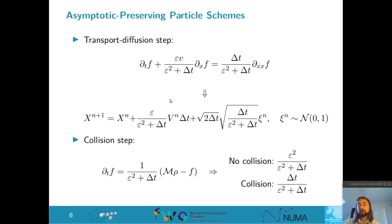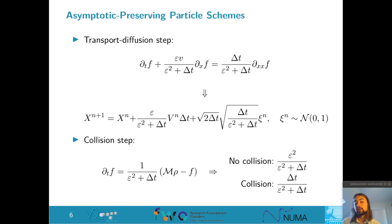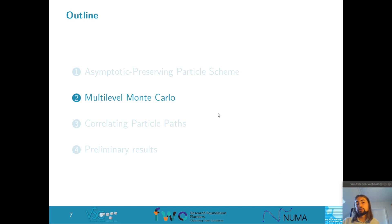We simulate using an operator splitting approach as before: first ignoring the collision operator we have a particle position x, a velocity v, and now also some Brownian motion, and we do a forward time step. Crucially, where we had the one-over-epsilon term that was blowing up, we now have a fraction that remains finite for all values of epsilon. The collisions work as before: we compute the probability of a collision in the given time step and either resample the velocity or keep it.